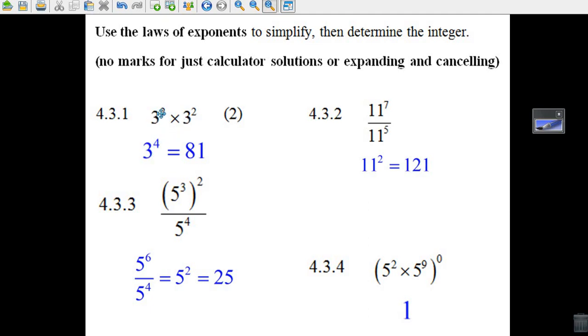The first law says when you multiply two things at the same base, you write down the 3 and you go 2 plus 2. That's a mark for getting 3 to the 4th.